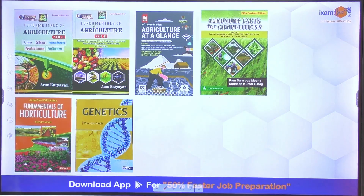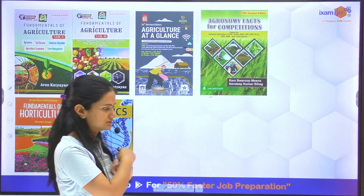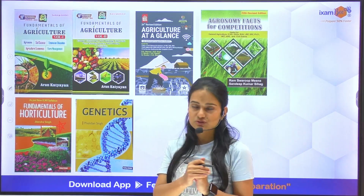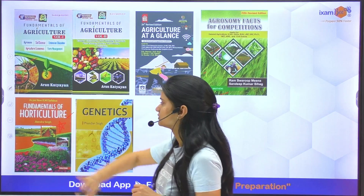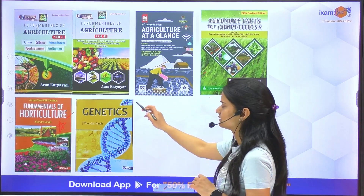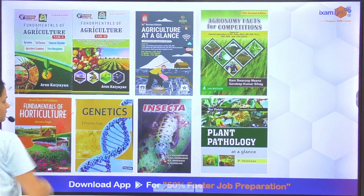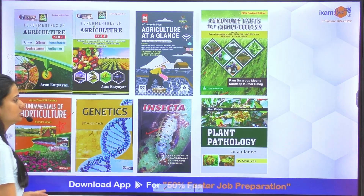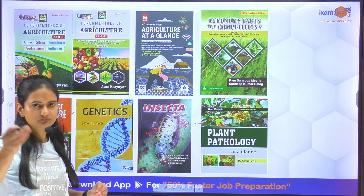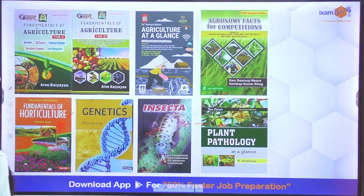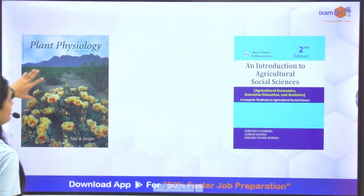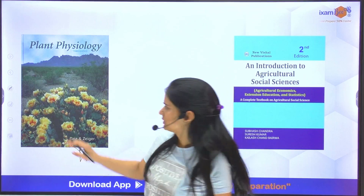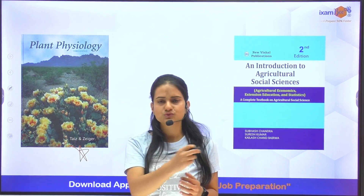Horticulture is of course important. The horticulture examination also has different types of questions — including plant physiology questions. For horticulture, you can learn from 'Fundamentals of Horticulture' by G.T. Singh, and for genetics from Fundan Singh's book. For entomology, use Insecta to cover your entomology portion. For plant pathology, you can also refer to Botany, as it covers tissues and related questions.